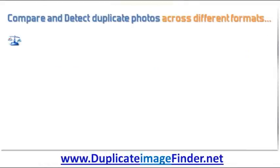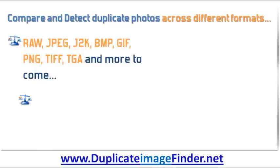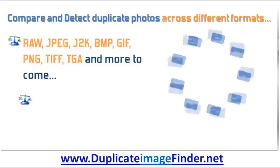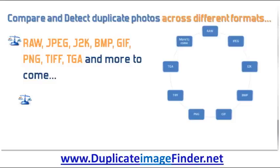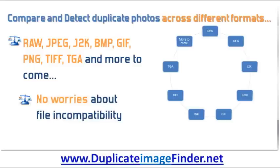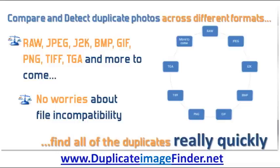If you have duplicate images in different formats it is even possible to find identical or similar photos with different file types. The formats supported include RAW, JPEG, J2K, BMP, GIF, PNG, TIFF, TGA and there are more formats to come in the future. So you are able to easily locate duplicates without having to worry if you have saved them in different formats.